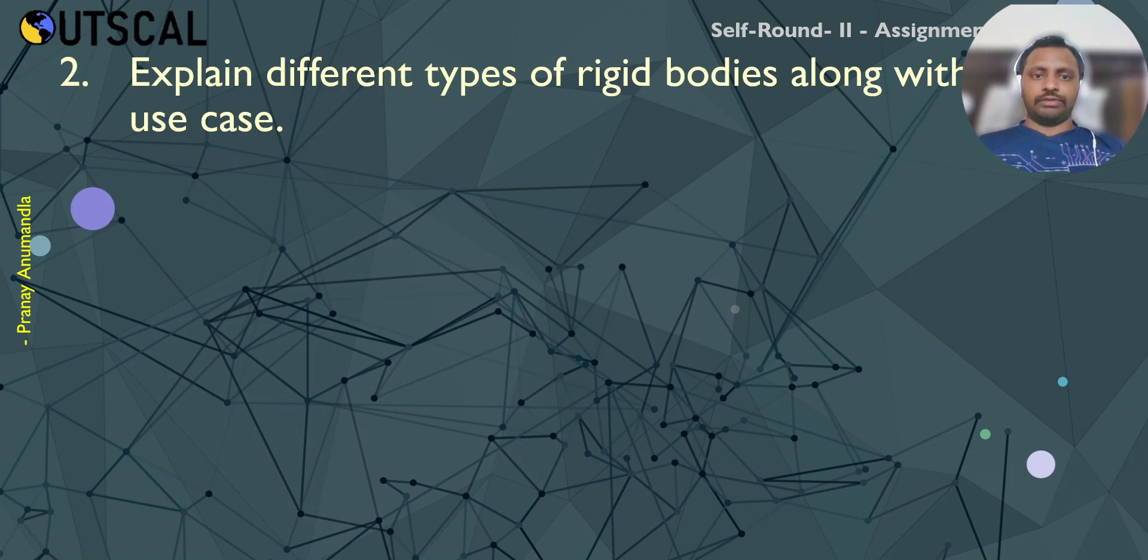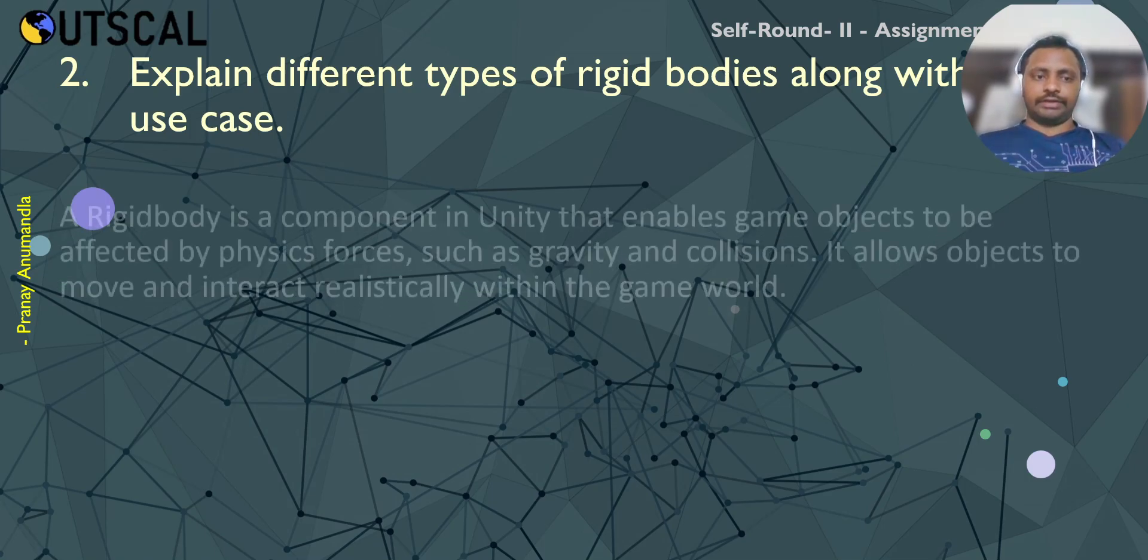Static rigid body, like a stable rigid body such as walls, platforms. They will be affected by physical forces like it will collide with dynamic or kinematic rigid body objects. But it will be static, it won't move from anywhere. Like walls, wall type of objects, platform type of objects, we will use static rigid body.